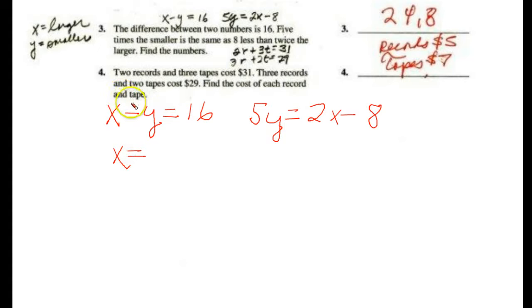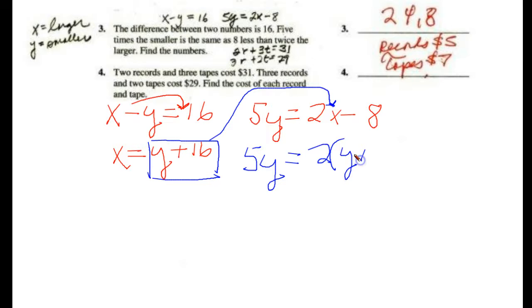So we get x, then, just transpose that, change its sign, y plus 16. Now that we have that, we'll just take this value of x and substitute it in the other equation. So we get 5y equals 2. Now, the x does have a coefficient, so we have to put the 2 there, put this in parentheses. That's our x value. Minus 8. So now we have a typical equation from chapter 2.